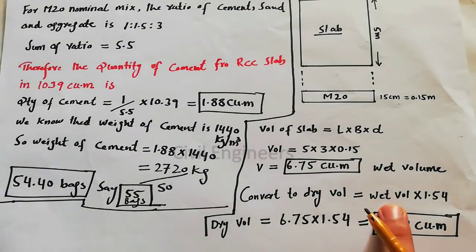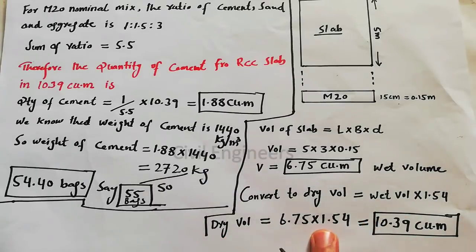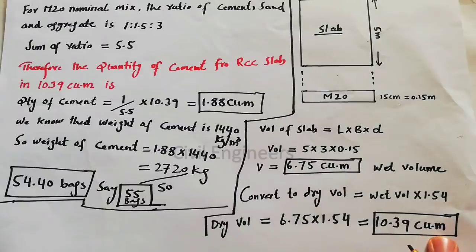Dry volume equals wet volume multiply 1.54. So dry volume is 6.75 multiply 1.54, which equals 10.39 cubic meter.